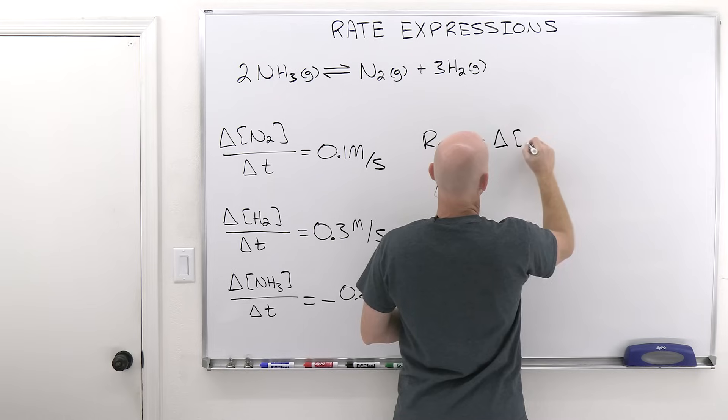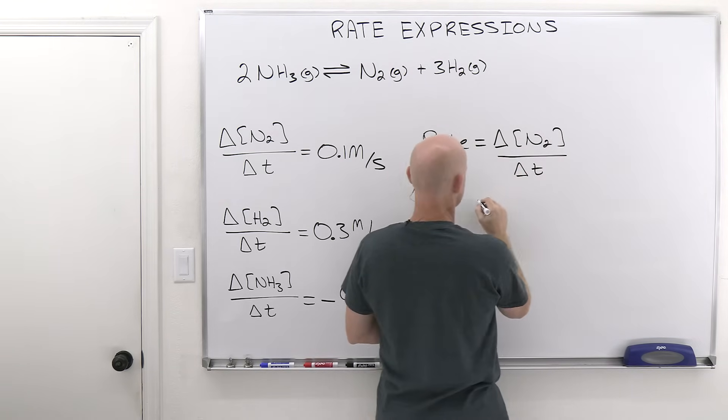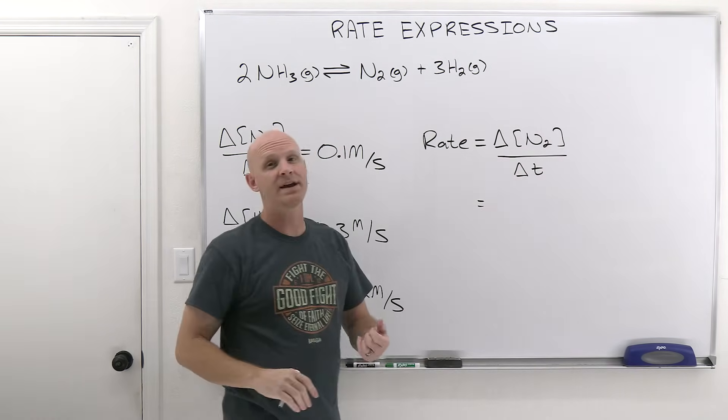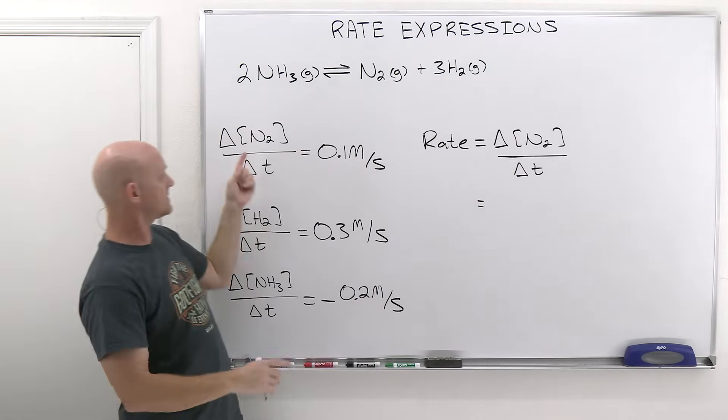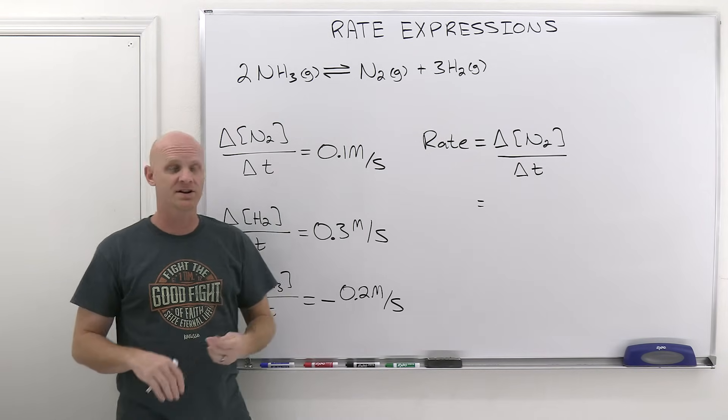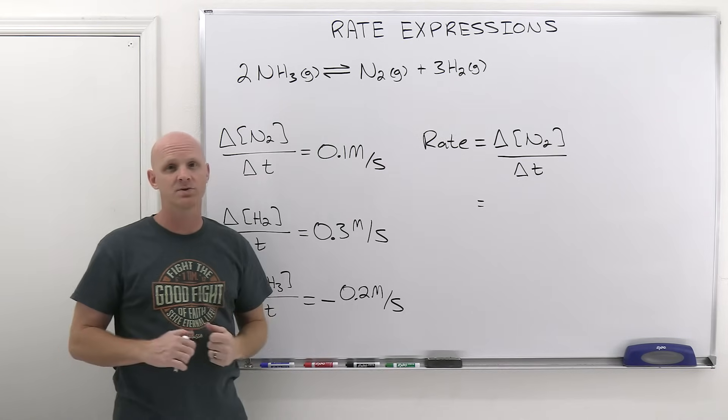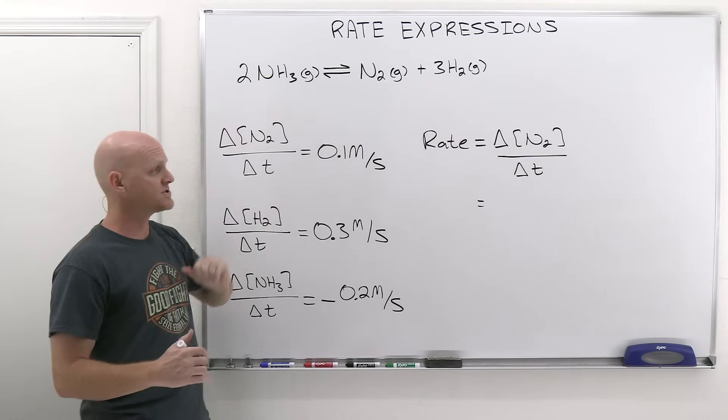So in this case, we could have the change in N2 over the change in time, and that would be what we call a valid rate expression. If you calculate this out, just like we were given here, it will give you the rate of the reaction. It's not only the rate of change for N2 over time, it's the rate of the reaction, more formally the rate of the entire reaction.